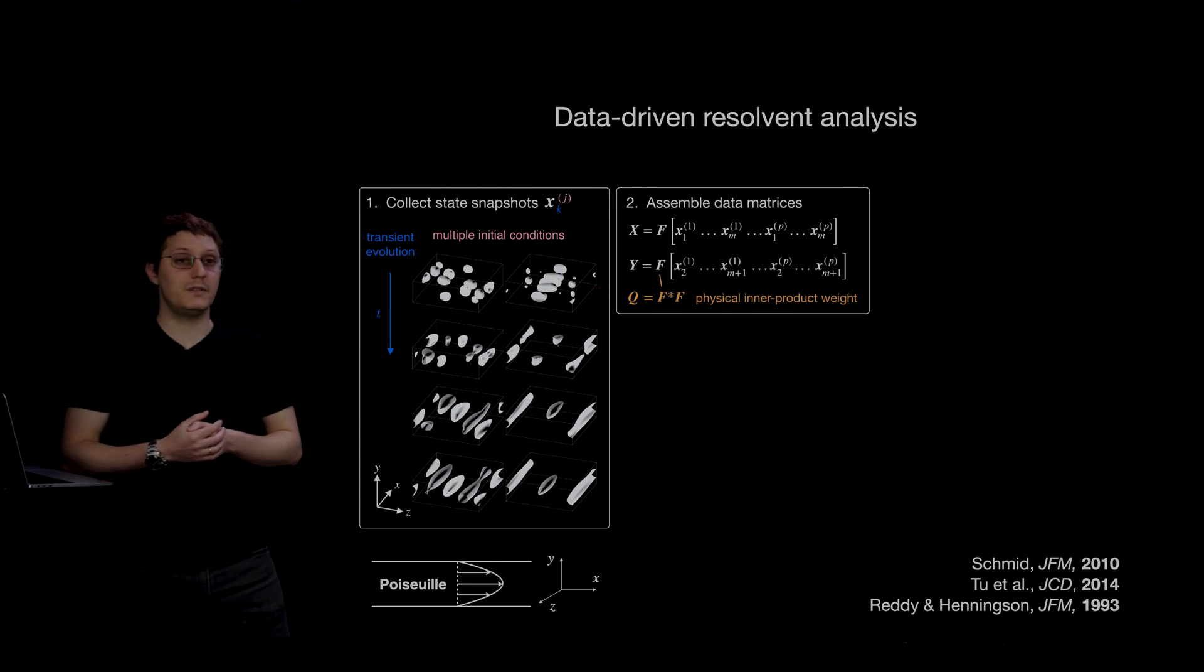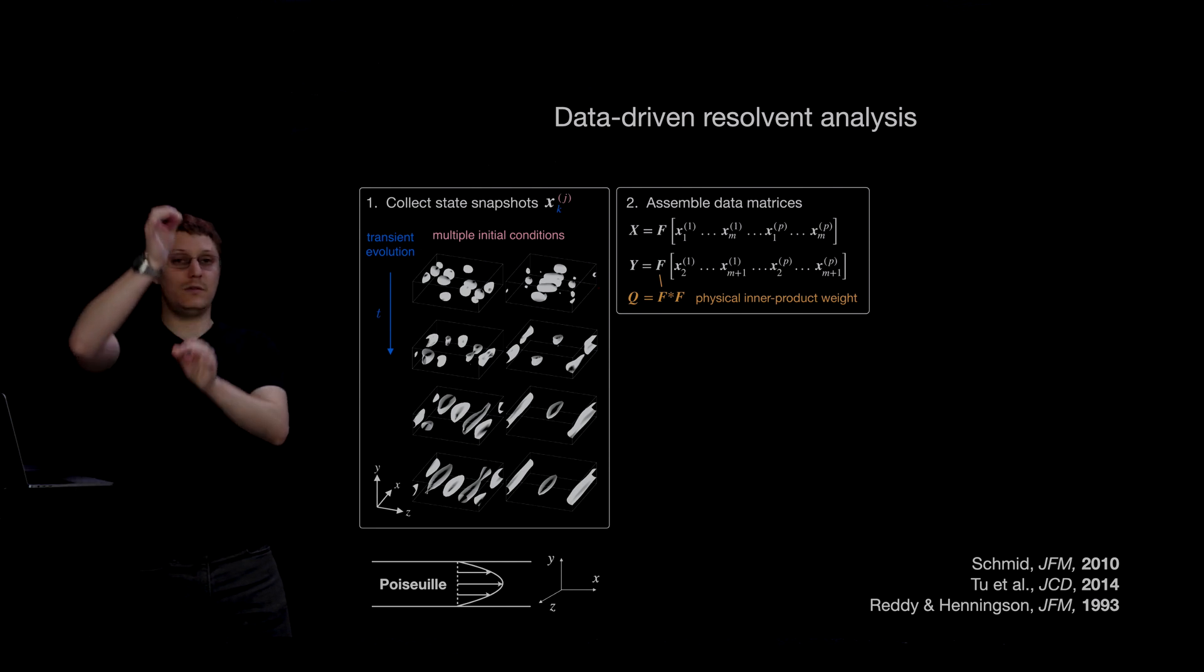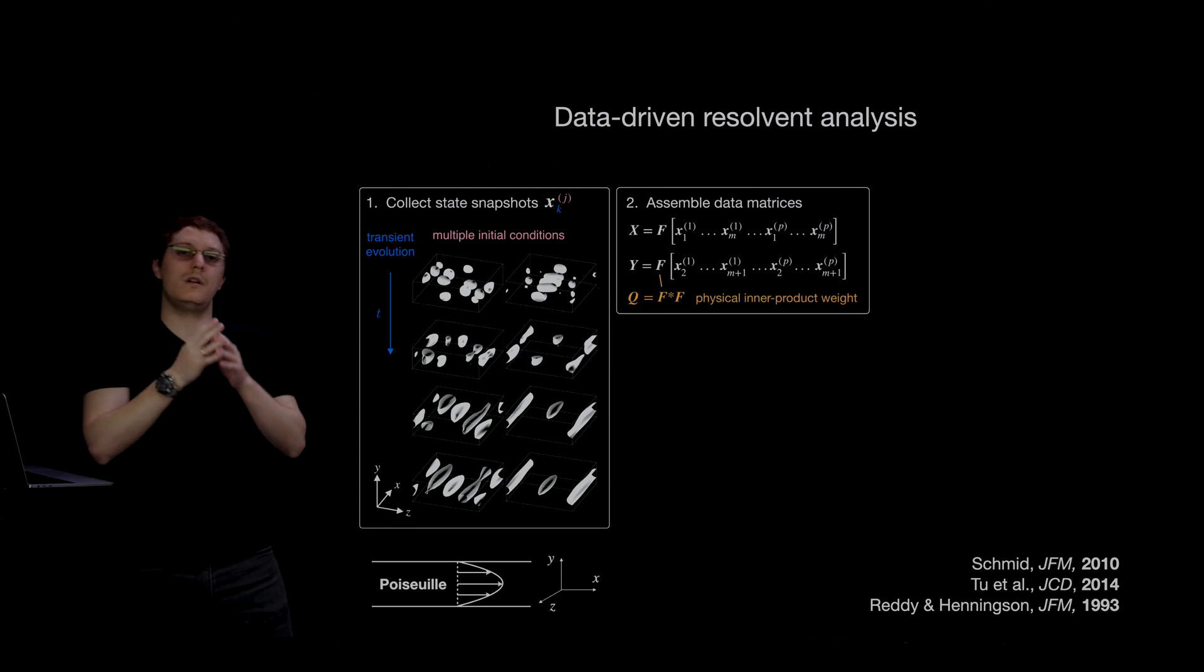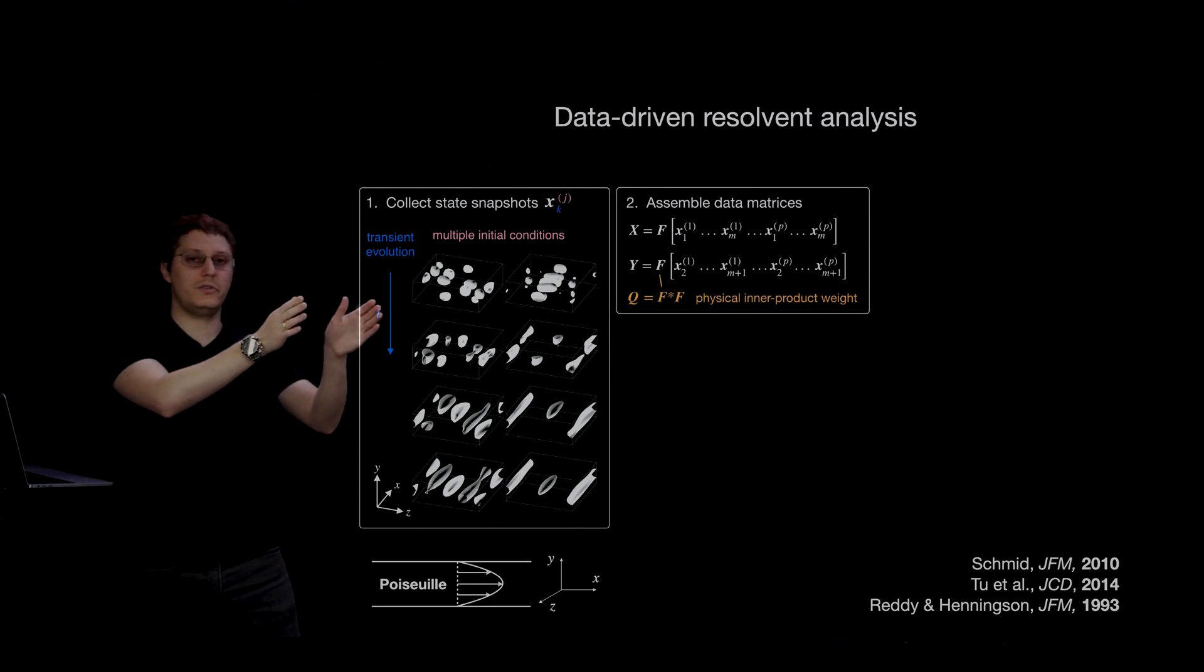The second step is to assemble our data matrices, which is just stretching the state into a very long vector and horizontally concatenating these states according to their temporal sequence, followed by the temporal sequence corresponding to the next initial condition,